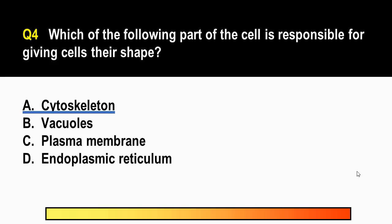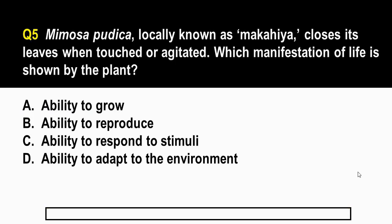We are now with question number five. Question number five goes, Mimosa pudica, locally known as makahiya, closes its leaves when touched or agitated. Which manifestation of life is shown by the plant Mimosa pudica? Letter A, ability to grow. Letter B, ability to reproduce. C, ability to respond to stimuli. And D, ability to adapt to the environment.